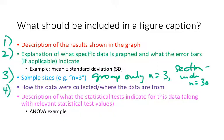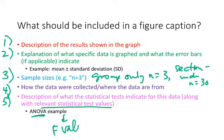Another thing we want to show in our figure caption is how the data were collected or where the data are from. And lastly, we also want to include a description of what the statistical tests indicate for this data, including any relevant statistical test values. If you think back to the ANOVAs we covered last week, the two values that are important to look at and that we want to report are the F value and the P value. So those are two things you would want to include in your figure caption.